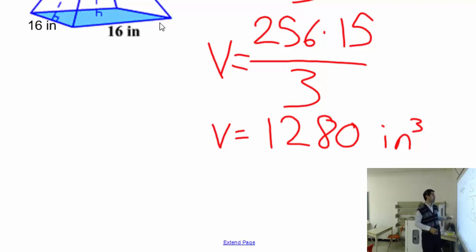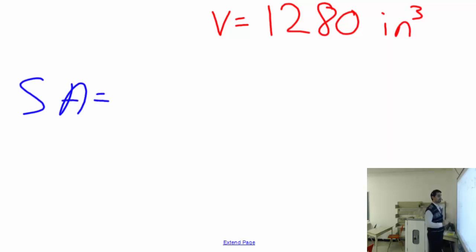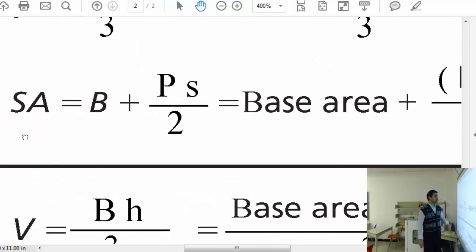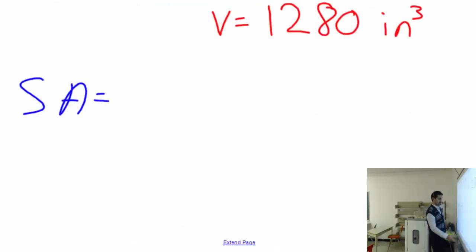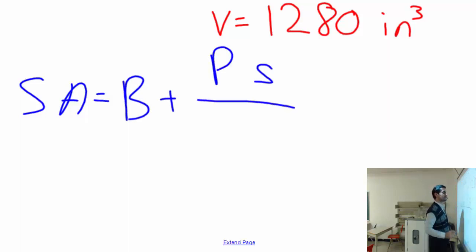Now I want to calculate the surface area. The surface area formula for a pyramid is SA = B + (P × s) ÷ 2, where B is the base area, P is the perimeter of the base, and s is the slant height.